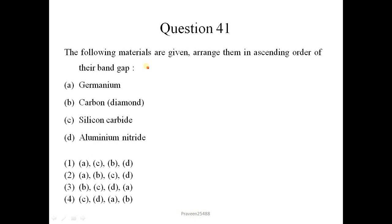Next question is. The following materials are given arrange them in ascending order of their band gap. So band gap of germanium is approximately 0.7 electron volt. Band gap for diamond carbon is 5.5 and for silicon carbide it is approximately 2.36. And for aluminum nitride it is approximately 6. So ascending order of their band gap is A, C, B, D. So correct option is 1.